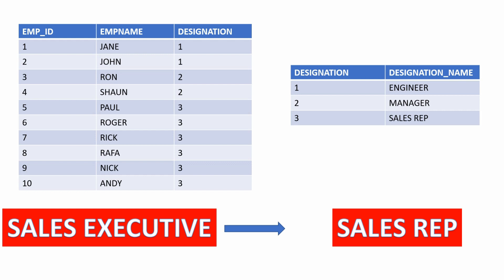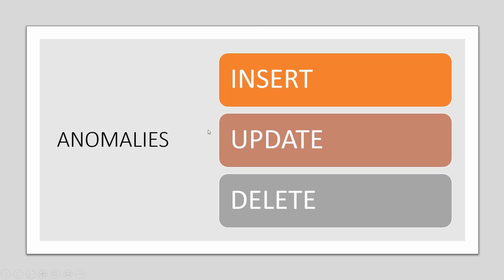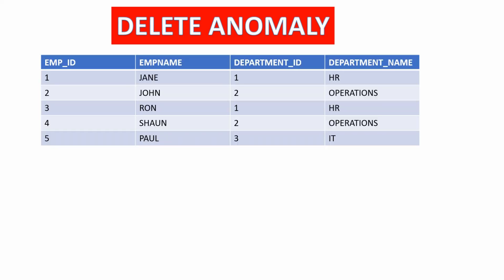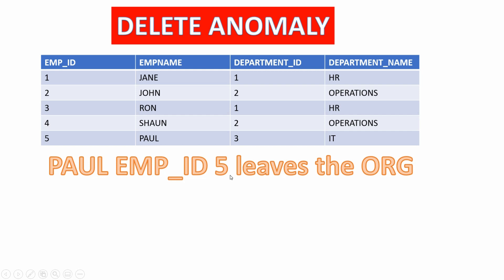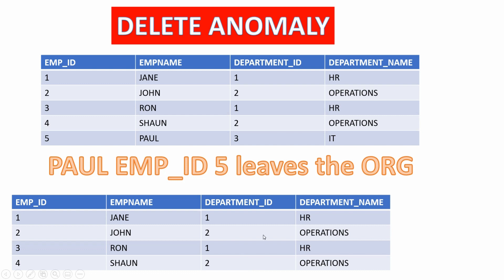Let's understand the second part of the definition which talks about data anomalies. Three types of anomalies are usually discussed: insert, update, and delete. We have our employee department table listing the employees' names and the departments they work for. Paul, who works for the IT department, decides to leave the organization. Since he was the only person in the IT department at the moment, we will lose the information of the IT department itself. This is called a delete data anomaly, and in a real project, no one designs their database in a way that deleting some data can lead to elimination of an unrelated area.